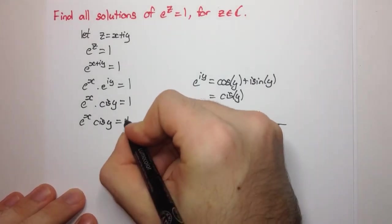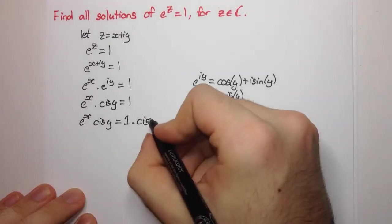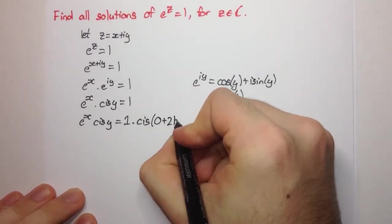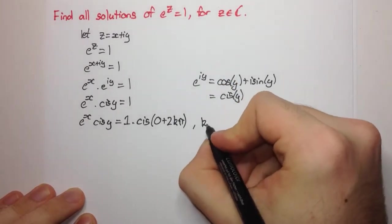So really, this is cis, or 1 times cis of 0 plus 2kπ, where k is some integer.